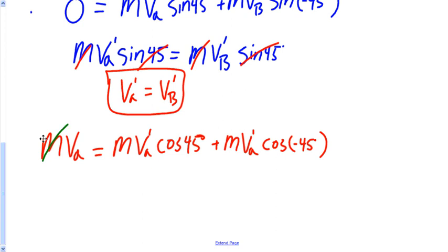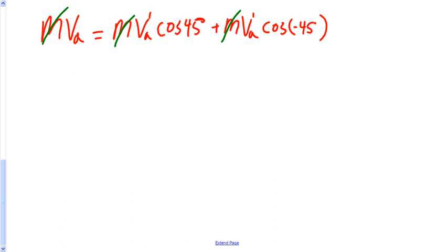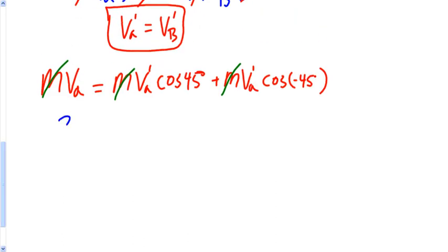Mass cancels out. We're going to plug in for our V A, so we have 3.0 meters per second equals V A cosine 45 plus V A cosine 45, which is 2 velocity of A afterwards times the cosine of 45 degrees.